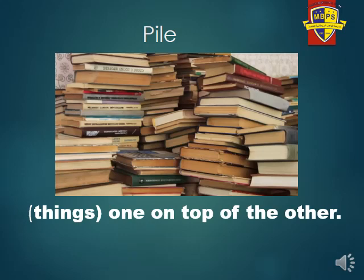Next word is pile. If you look at the picture, you can see there are a lot of books, one on top of the other. The meaning of pile is things placed one on top of the other. For example, in a sentence: I have to check a pile of copy books.